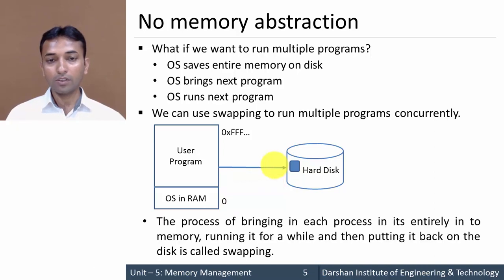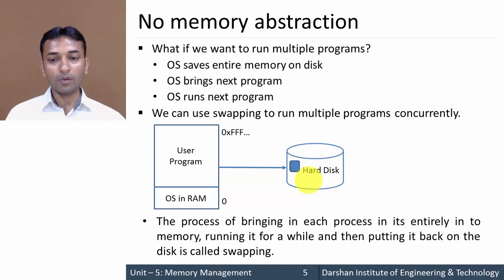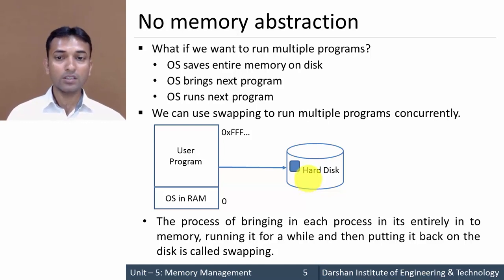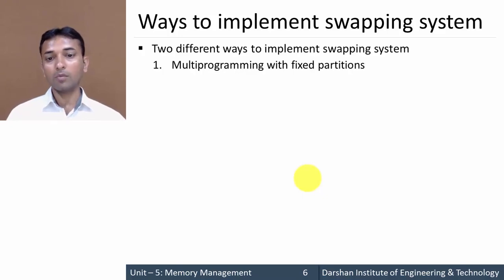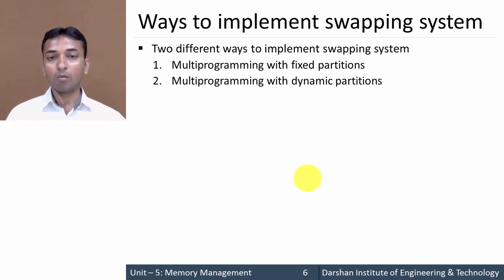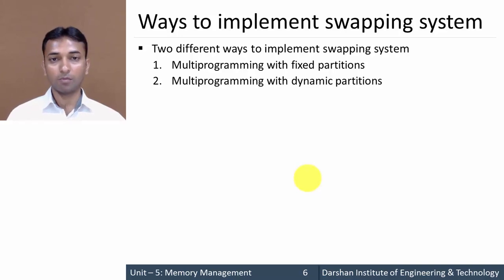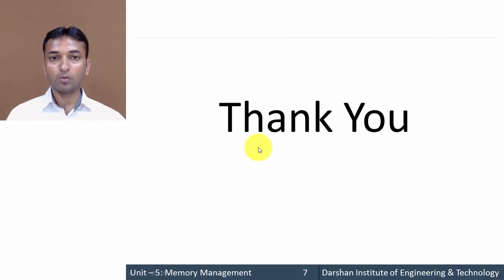If we want to define swapping: it is the process of bringing each process in its entirety into memory, running it for a while, then putting it back on the disk. This is known as swapping, and we use swapping to execute more than one program in the case of no memory abstraction. There are different ways to implement a swapping system: first is multiprogramming with fixed partition, and second is multiprogramming with dynamic partition. Thank you very much.